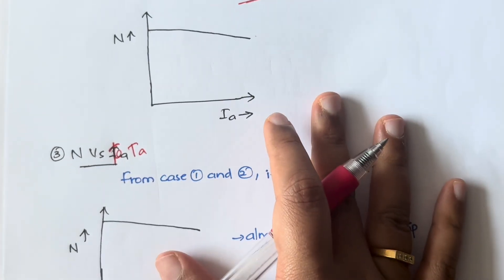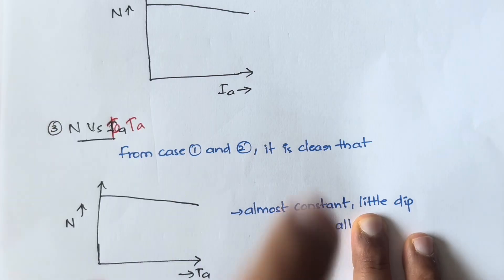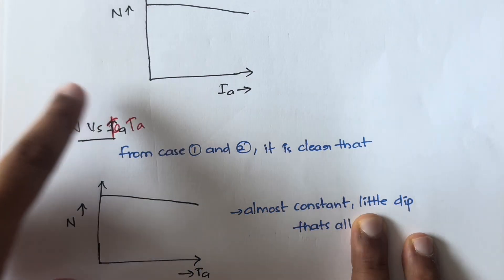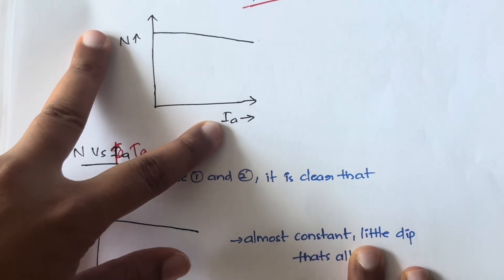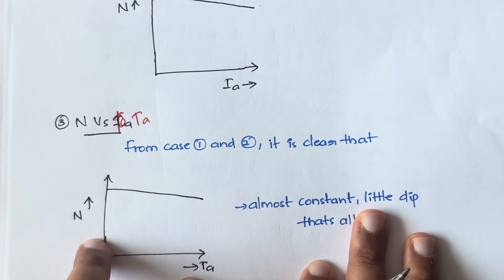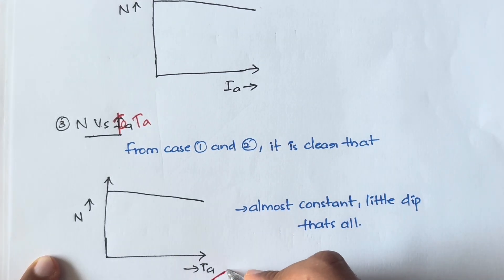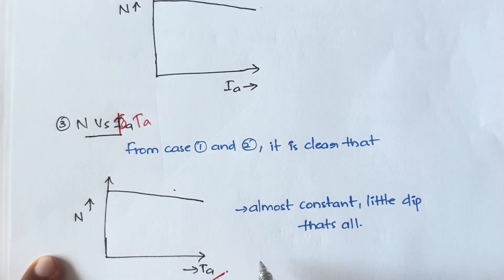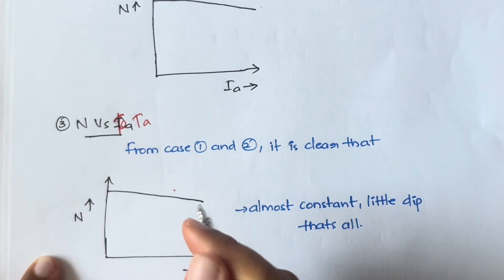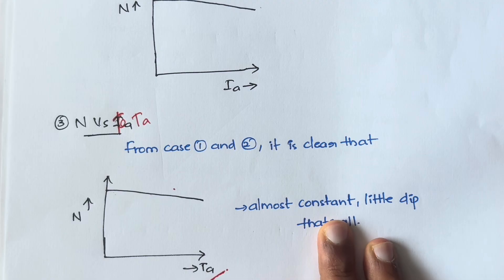Next is speed versus armature torque. From cases one and two, current is directly proportional to torque, and the relationship between current and speed is mostly constant. So the relationship between torque and speed is also the same — speed is mostly constant, but if torque becomes very high, you will see a small dip in the speed of the motor.